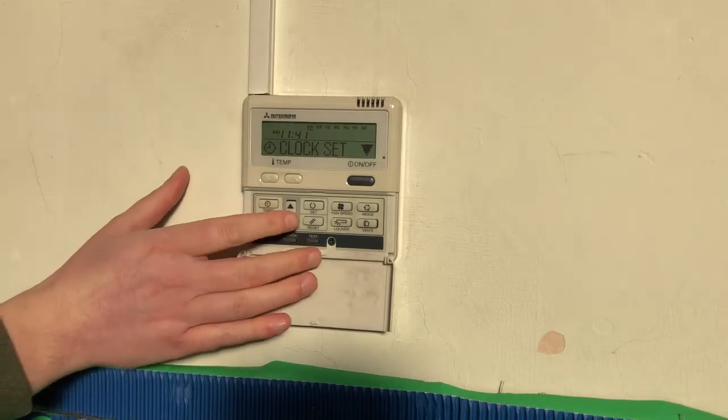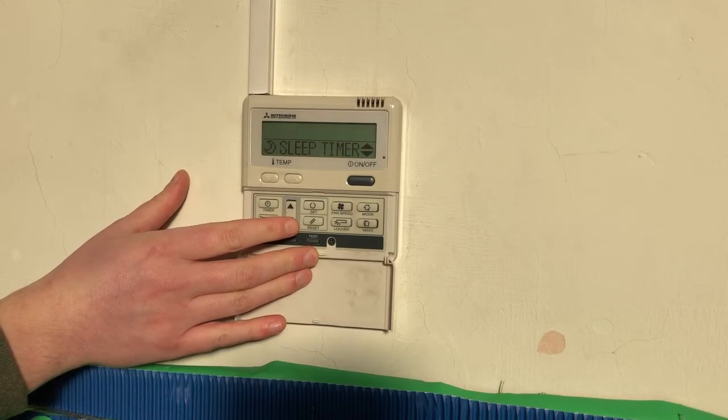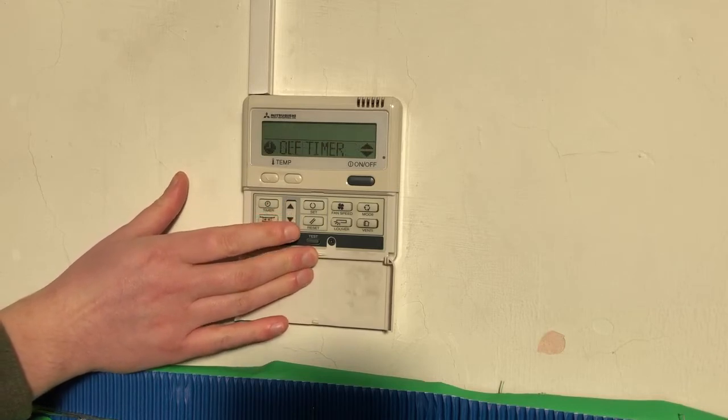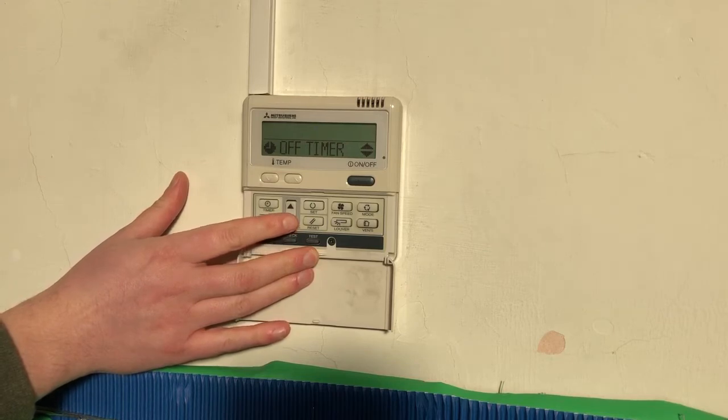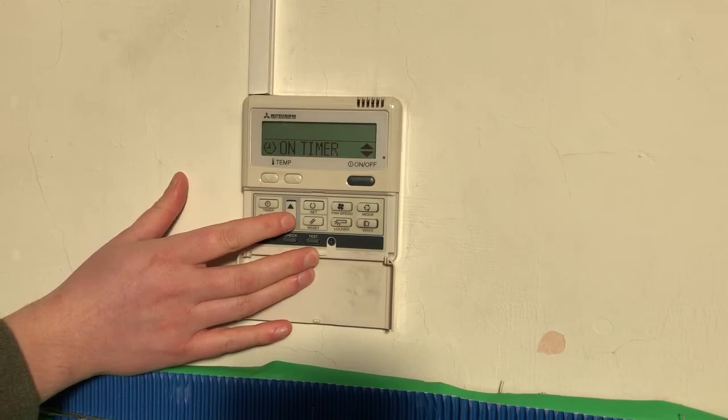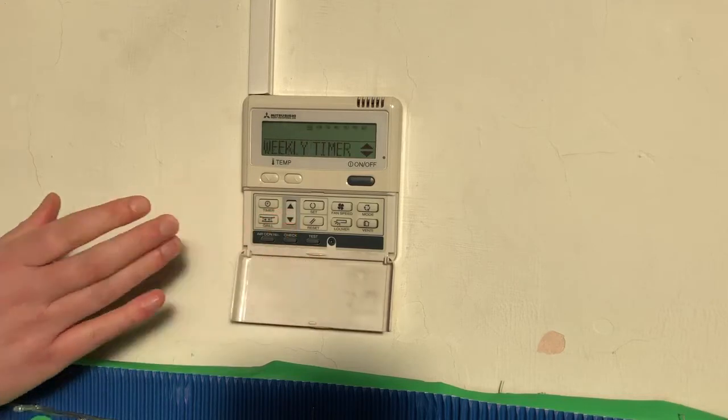So the first one here is you can set the clock, then you can put a sleep timer on it, scroll down, you can turn an off timer and I'll talk about that in a minute and an on timer. So that's about setting the specific timers for it.